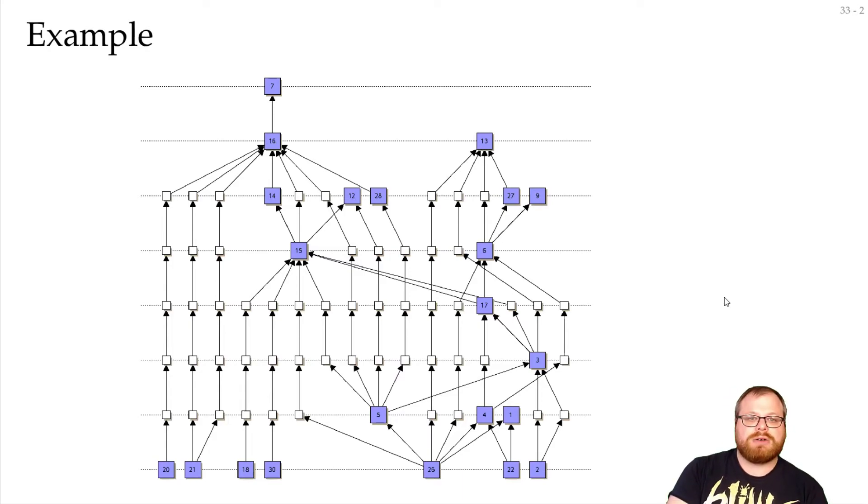Now we have the exact coordinates. So the only thing that's left is to draw the edges. And basically, we could leave them as layout, just remove all the dummy vertices and draw them with bends.